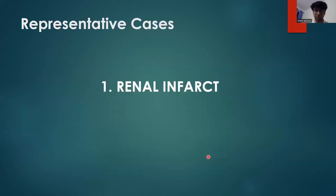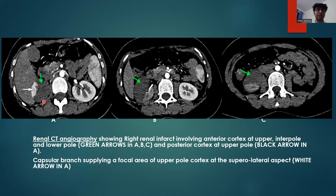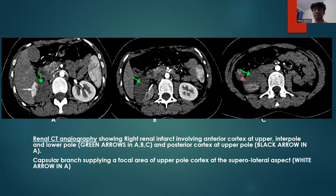This is a post-contrast CT abdomen in the angiographic phase showing a renal infarct case. We can see the infrarenal abdominal aorta and the SMA. The left kidney shows normal cortical enhancement, whereas on the right side there is no enhancement of the anterior part of the cortex, nor of the posterior part of the cortex at the upper pole, the anterior part and some of the posterior cortex at the interpole, and the anterior cortex at the lower pole. Some mild enhancement is seen on the posterior cortex, but it is less compared to the normal left side.